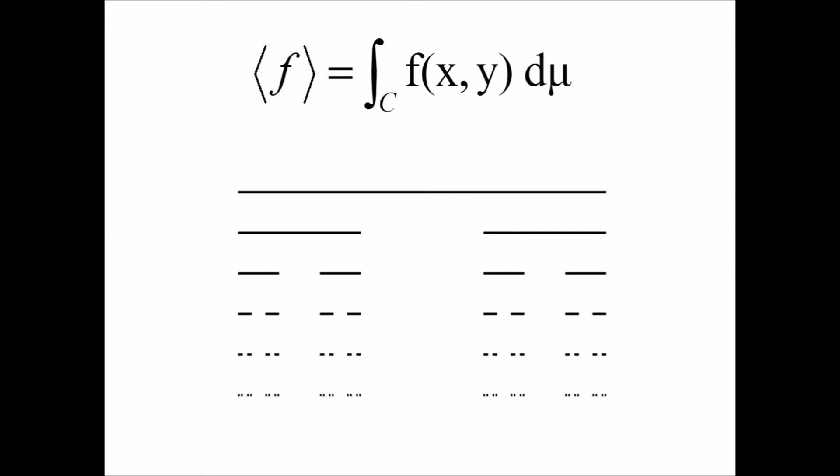We can assign a uniform measure to this fractal set by taking advantage of the construction process. The first step is mostly trivial: we need the measure to add up to one, so we assign one to the single piece. In the second step, we assign the value of one-half for the measure, and we continue this process indefinitely. I encourage the viewer to check that the sum of the measures at each step stays constant — consider what would happen if this weren't the case and whether the construction would be well-defined.